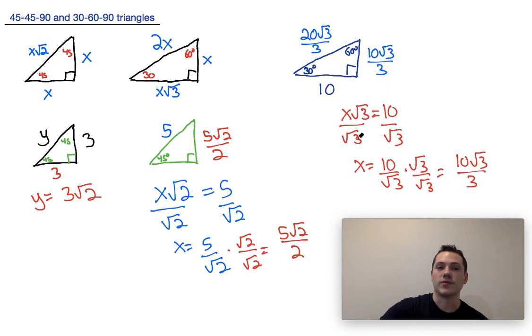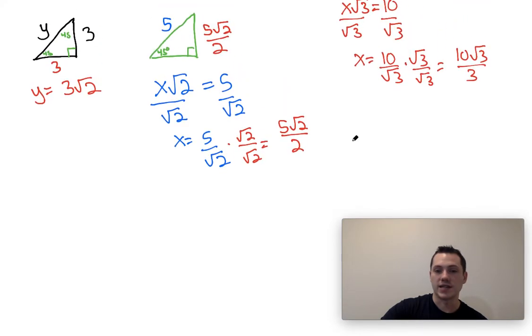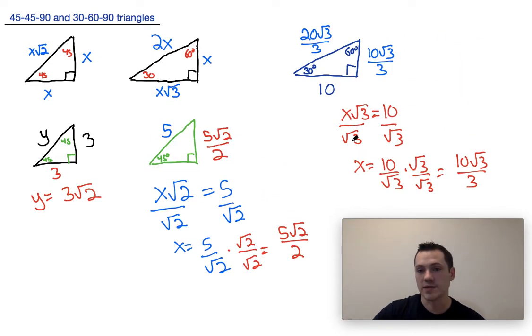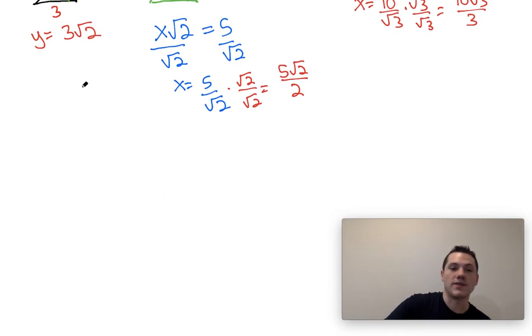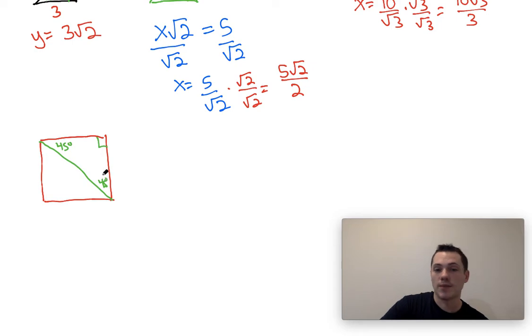Other ways to use 45-45-90 triangles and 30-60-90 triangles involve using them to find values of other shapes. So for example, if I have a square, and I cut a diagonal line across the square, I have now formed a 45-45-90 triangle. So a common problem on the SAT might tell you that the diagonal of the square is equal to something like 6 root 2. Well, if the diagonal of the square is equal to 6 root 2, that means the hypotenuse of this 45-45-90 triangle is also equal to 6 root 2.